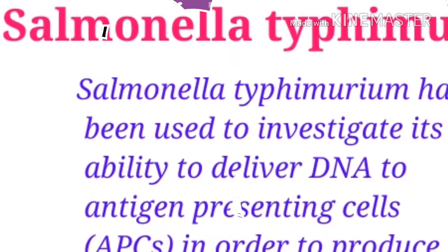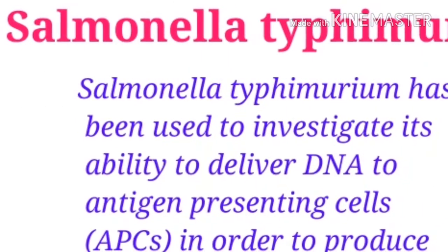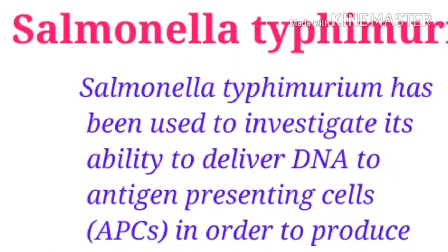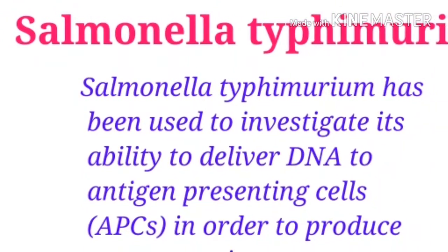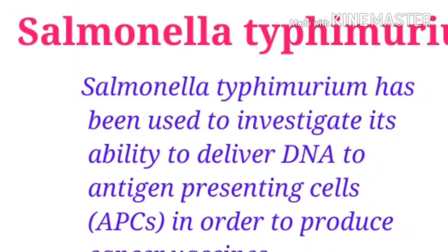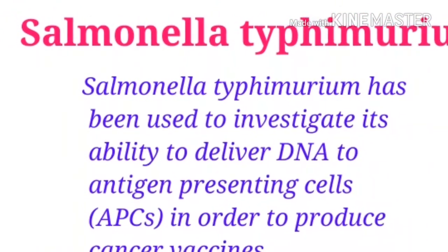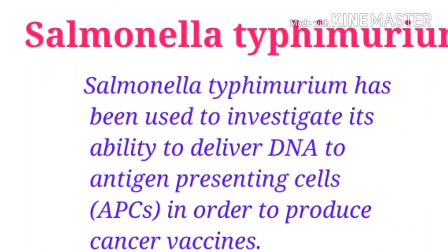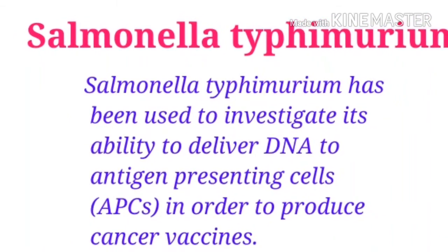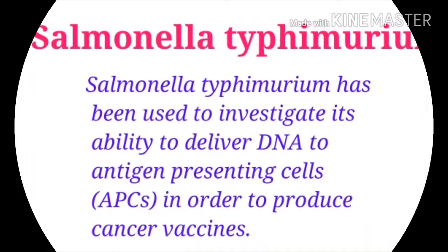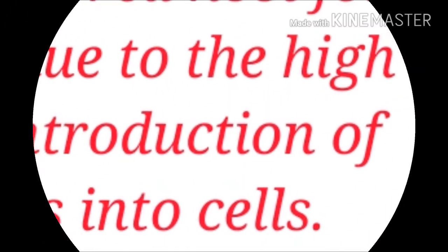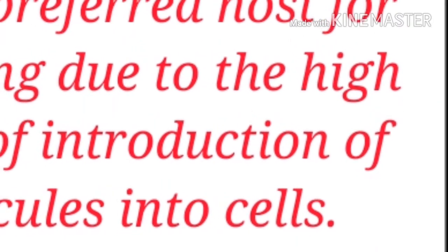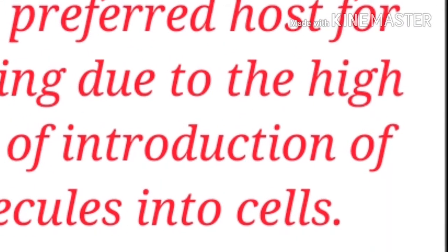So let's start with the question. There are four options. The first option is Salmonella typhimurium. Salmonella typhimurium has been used to investigate its ability to deliver DNA to antigen-presenting cells in order to produce a cancer vaccine.